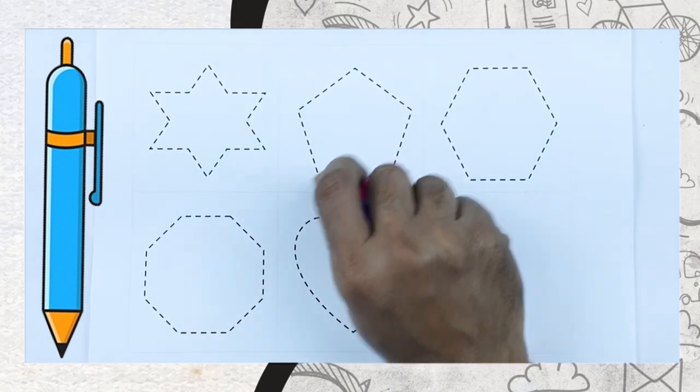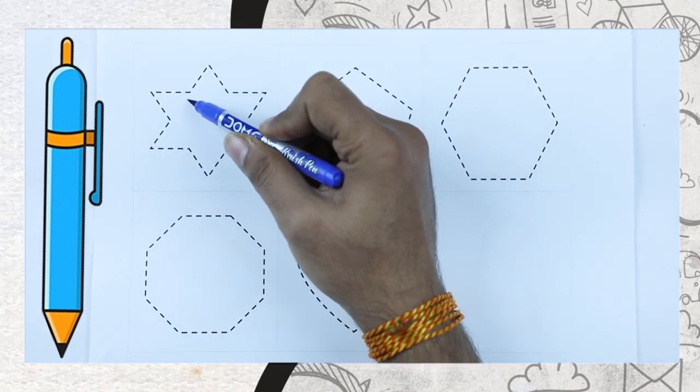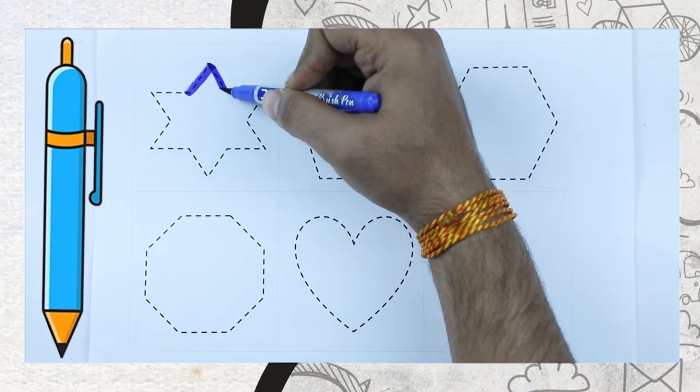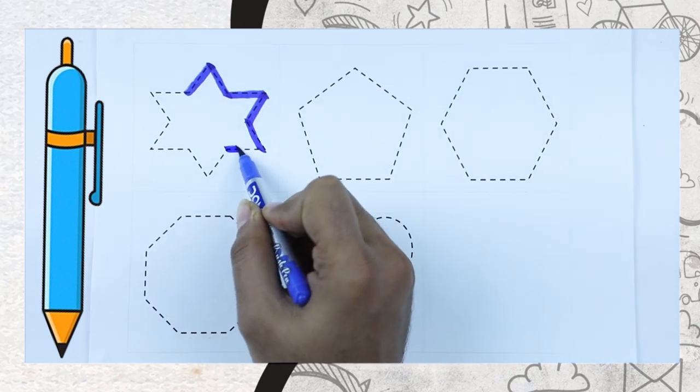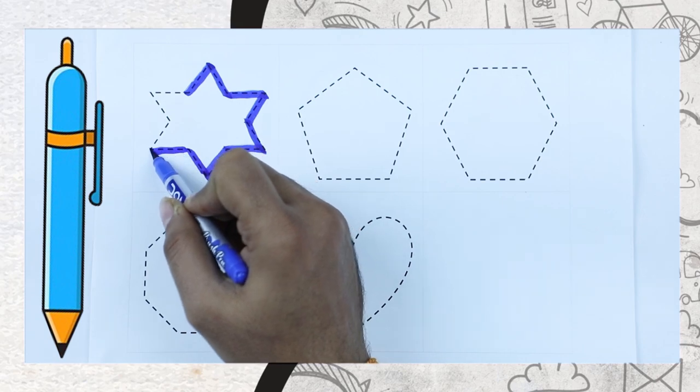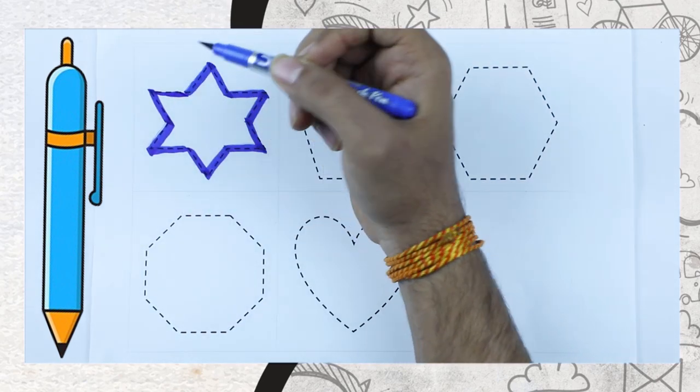Now we make shapes. It's blue color. It's a star. Now we make star with blue color. Yes, it's star.